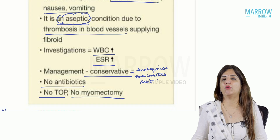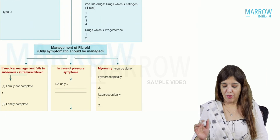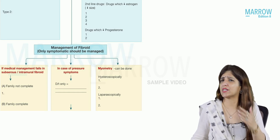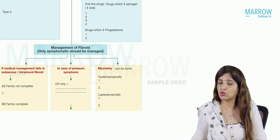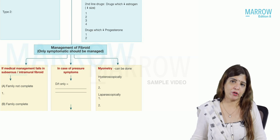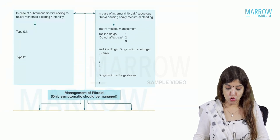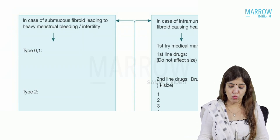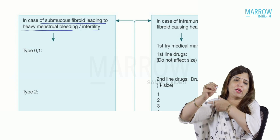Only symptomatic fibroids have to be managed. Asymptomatic fibroid, irrespective of size, is not managed unless it is a pedunculated subserous fibroid likely to undergo torsion, a bilateral cornual fibroid, or a fibroid increasing in size in a postmenopausal female. When managing symptomatic fibroid, it depends on the symptoms and the type of fibroid. For example, if a submucous fibroid is leading to heavy menstrual bleeding or infertility, you go for surgical management.